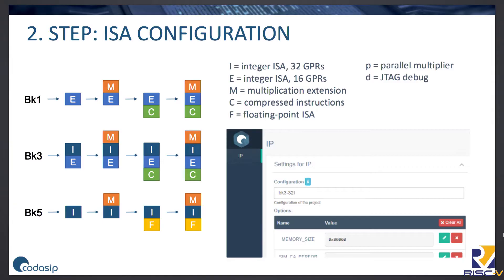The next step is ISA configuration. CodaSIP Studio contains a configuration layer where you can select the variant of the core by enabling and disabling ISA extensions. For example, looking at BK5, you can select just the integer instructions, or enable the multiplication and division extension, or enable floating point, or both. In this way you can easily create four variants of the core. The same applies for Berkelium 1 and Berkelium 3. You can also configure the memory size, enable a parallel hardware multiplier for the multiplication and division extension, or enable JTAG debugging.